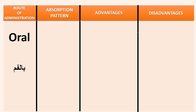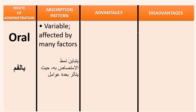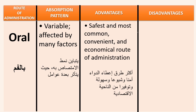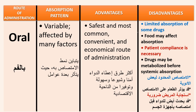Oral route: its absorption pattern is variable and affected by many factors. It is the safest, most common, convenient, and economical route of administration. Its disadvantages are limited absorption of some drugs, food may affect absorption, patient compliance is necessary, and drugs may be metabolized before systemic absorption.